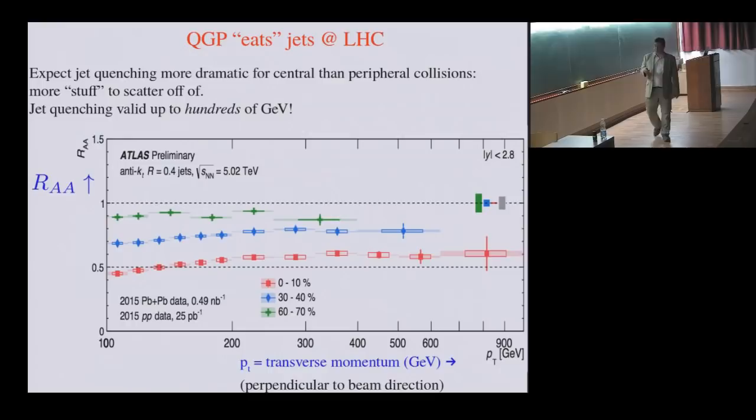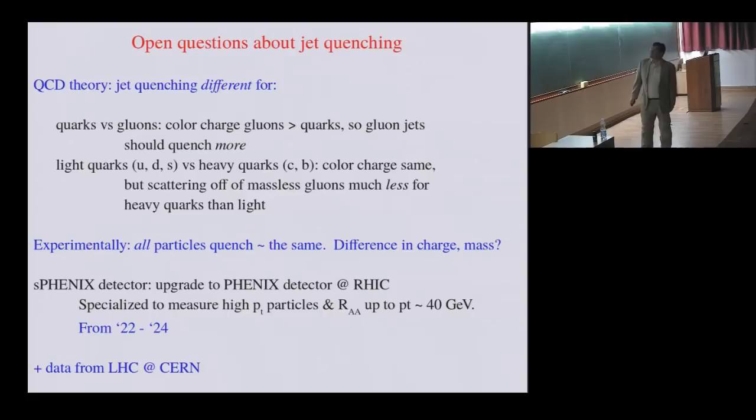There are still many open questions about jet quenching. Quarks and gluons have different color charge. And so you would expect you could distinguish between the quenching of quark jets and gluon jets. This is not possible at the present time. More to the point, if you consider the radiation of a light quark versus that of a heavy quark, well, here the color charge is the same. But the scattering of massless gluons for heavy quarks is much less than that for light quarks. And yet the quenching, the RAA, for heavy quarks such as charm and bottom is approximately the same. And this is something that is really very surprising. Besides the program at the Large Hadron Collider, there's also an upgrade of the PHENIX detector at Brookhaven, which from 22 to 24 will measure this kind of jet quenching up to much higher transverse momenta, up to about 40 GeV.